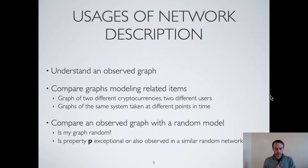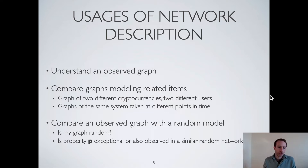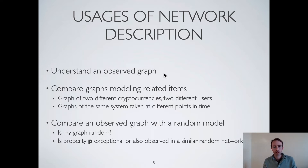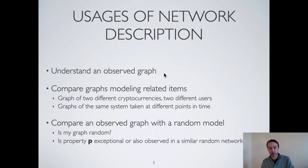After introducing these basic notions, we can start introducing real network description. The first question is: how can it be useful to describe a network with specific tools? The first application is simply to understand a graph — for instance, a graph of transactions between people in Bitcoin — to know how many actors there are, how many connections, if they are strongly connected, these kinds of things.